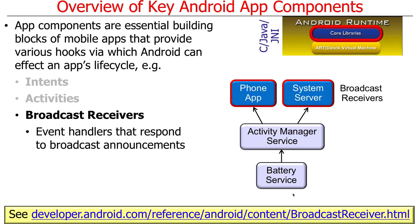Broadcast receivers are basically event handlers that can be dispatched and notified when something interesting happens. A good example: you can subscribe to learn when the battery on your phone has gotten too low, which will then notify your phone app or the system server, giving you a pop-up toast or an icon saying your battery is running low. That's one of the things you can do with a broadcast receiver.